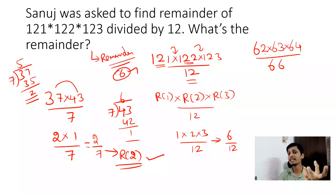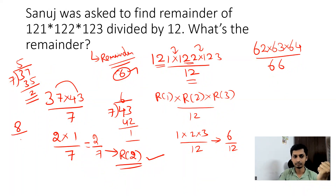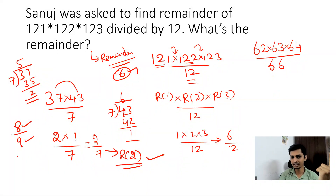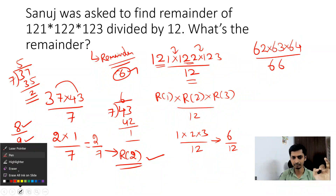Let's take 62 × 63 × 64 divided by 66. The numerator numbers are all less than 66, so we use the negative remainder technique. For example, if I ask you 8 ÷ 9 — since the numerator is less than the denominator, the remainder is 8, because it's not divisible.